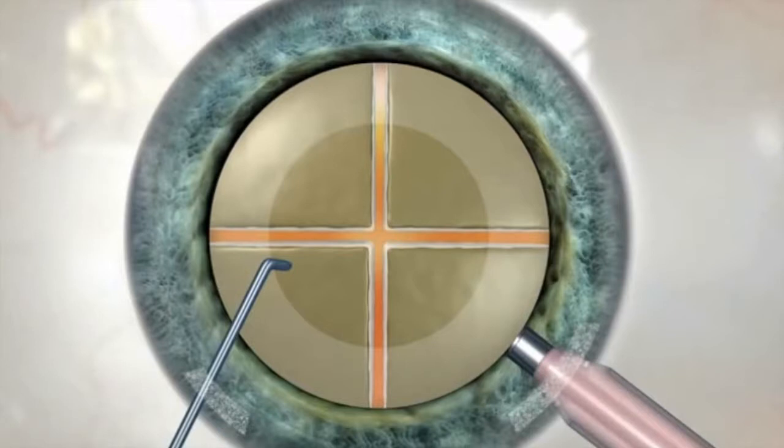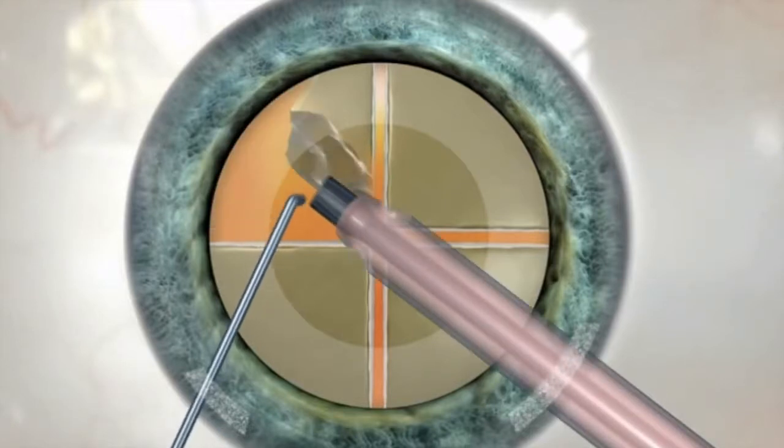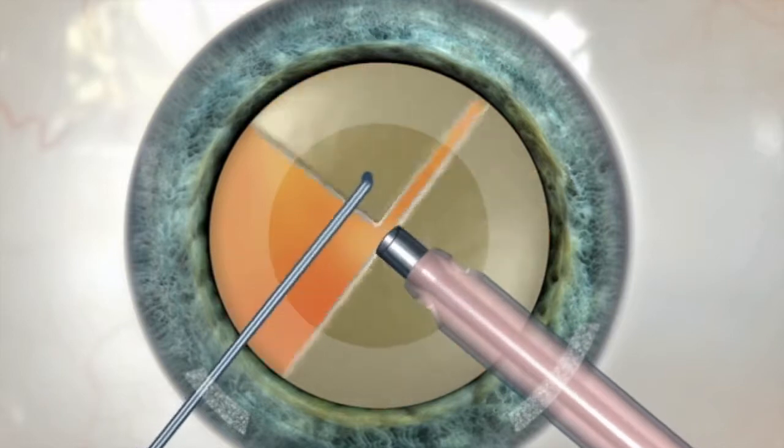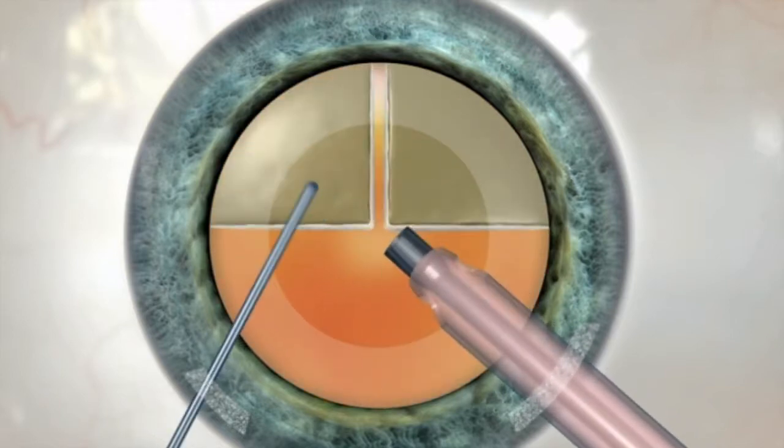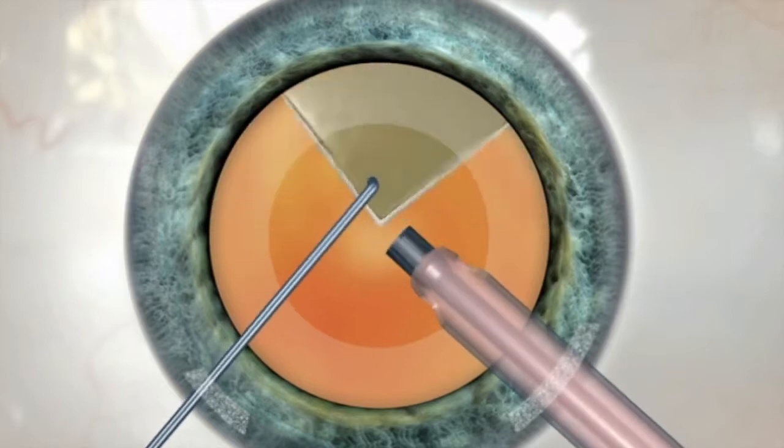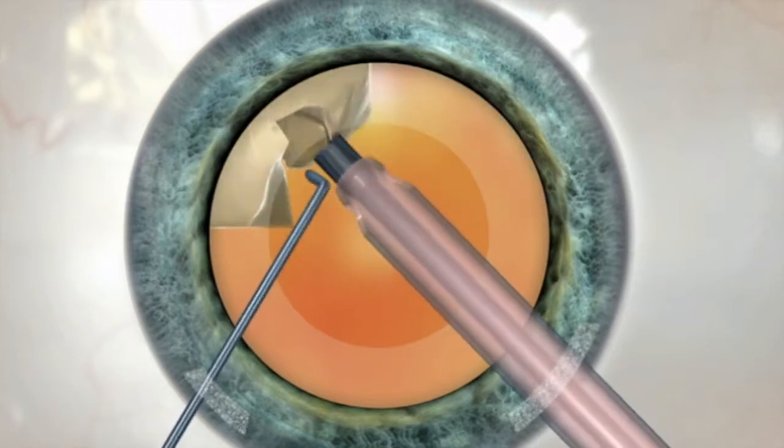Cataract surgery involves removing the cataract, the cloudy lens, from the eye. The lens sits in a bag, and we make an opening in the bag and remove the contents. And that leaves an empty bag.